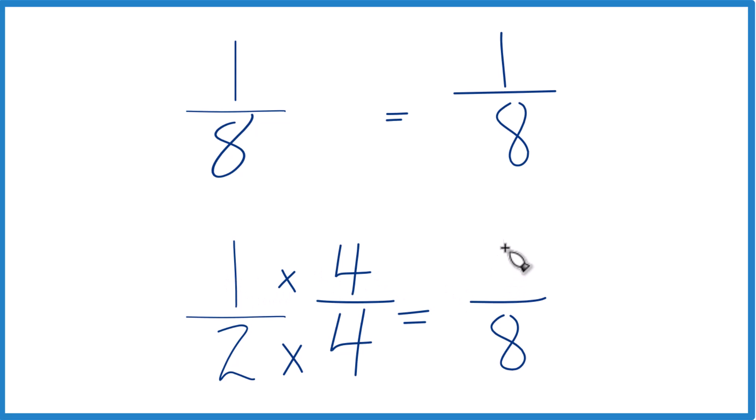1 times 4, that's 4. And 4 eighths is an equivalent fraction to 1 half. They have the same value. Have the same denominator. We compare the numerators, 4 is larger than 1. 4 eighths is larger than 1 eighth. So 1 half, that's larger than 1 eighth as well.